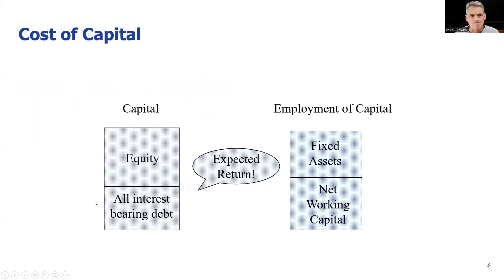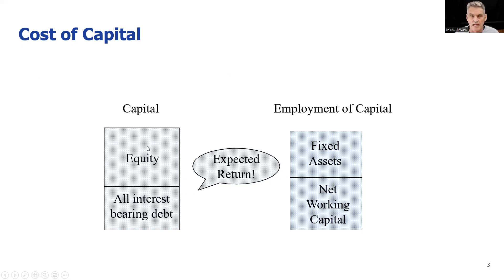To illustrate this, remember companies have got assets on their balance sheet, and these assets are funded by capital. There are two main types of capital: interest-bearing debt — debt is anything that costs interest — and equity, which is the money represented by shareholders.